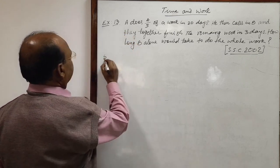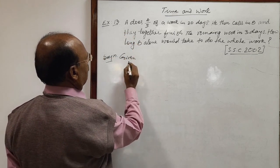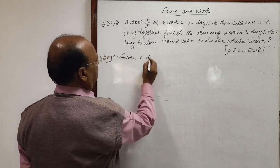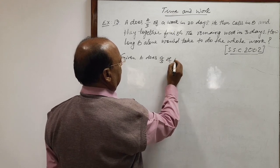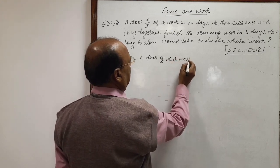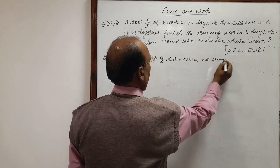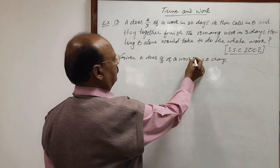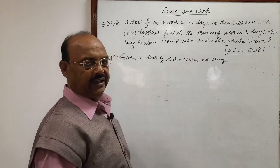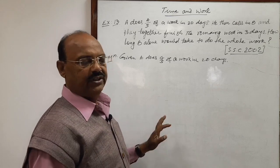Let us see the solution here. Here given A does 4 by 5 of a work in 20 days. Here we will try to find out work done by A in 1 day which we will get by unitary method.